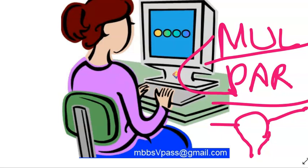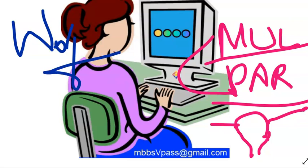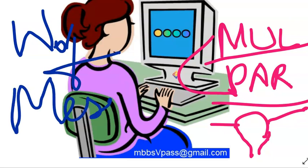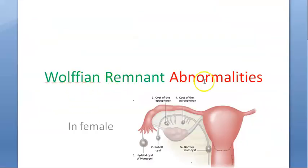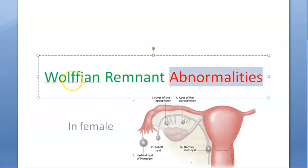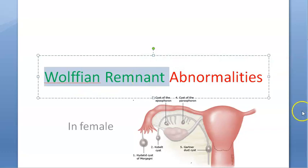In men, the duct that gives rise to their reproductive parts is the Wolffian — Wolffian in men — also called the mesonephric duct. So this Wolffian duct will be a remnant in the female. In females, you will have a Wolffian duct remnant, and you will see the abnormalities of this Wolffian remnant.